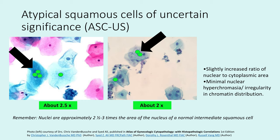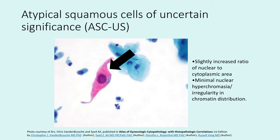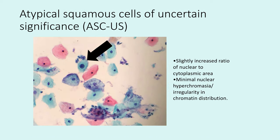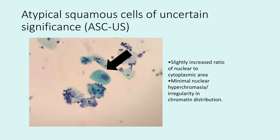Another example of an ASCUS cell shows increased NC ratios and some chromatin changes, but no really good HPV change or irregularity of the nuclear membrane. Another cell almost looks a little bit metaplastic — once you start seeing metaplastic cells, you might worry about an ASC-H diagnosis. However, there is too much cytoplasm in the cell and the NC ratio is not significantly increased, so an ASCUS diagnosis is appropriate here as well.